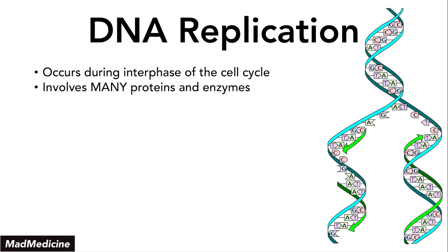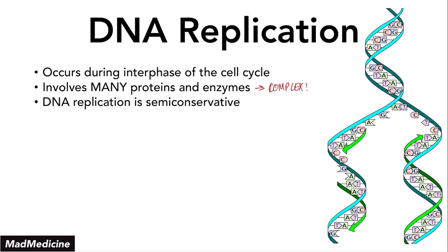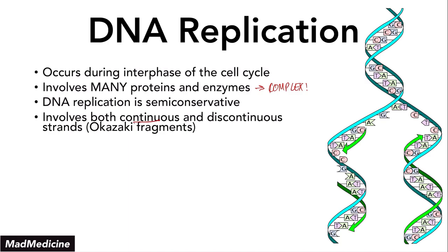DNA replication involves many proteins and enzymes — it is not a simple process. It is very complex. DNA replication is a process that is semi-conservative. It involves both the continuous and the discontinuous strand, also known as the Okazaki fragments, and it occurs in the five prime to three prime direction always.